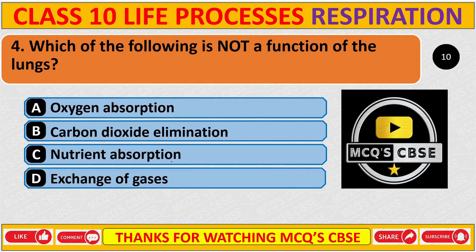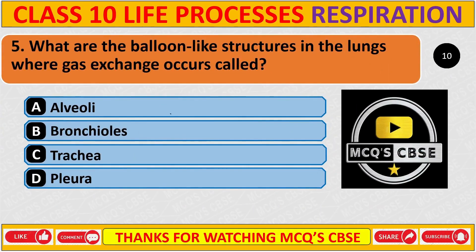Question 4: Which of the following is not a function of the lung? Correct answer is C: Nutrient absorption. Question 5: What are the balloon-like structures in the lungs where gas exchange occurs? Correct answer is A: Alveoli.